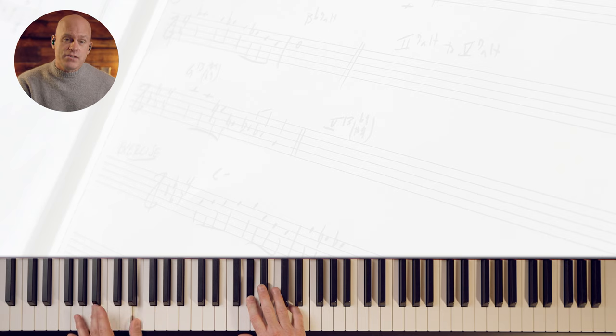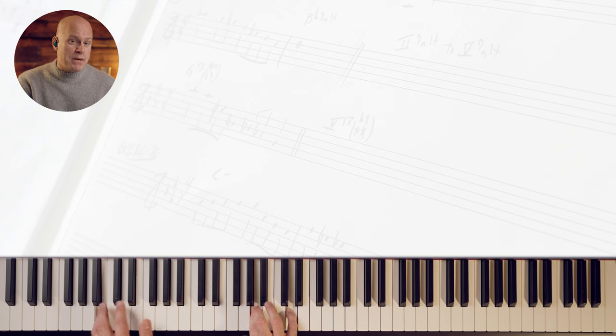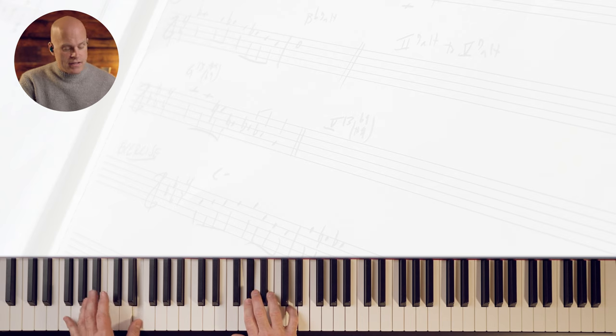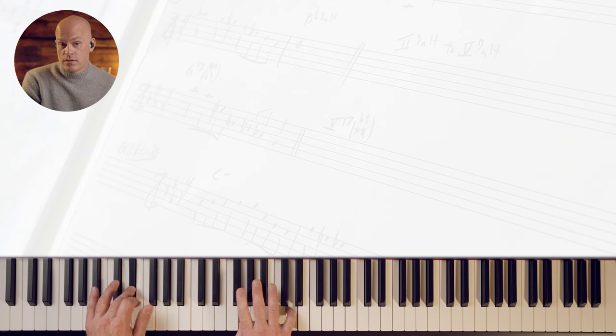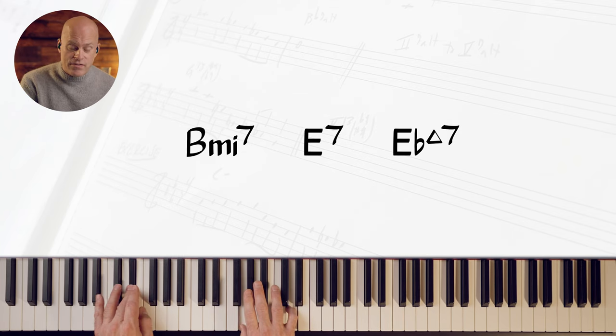Now what you can also do is you can precede the tritone sub with its own two chord. So E seven is a tritone substitution. The two chord preceding it is B minor seven, because E indicates key of A indirectly, but you can now go B minor seven, E seven, E flat.